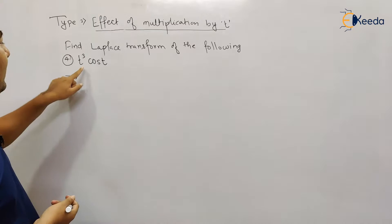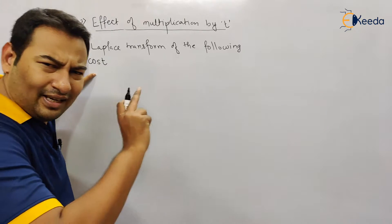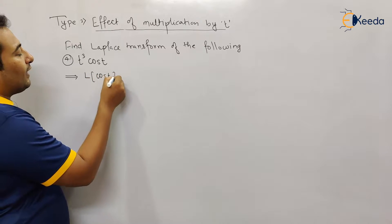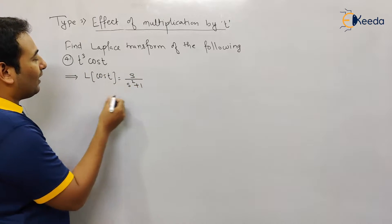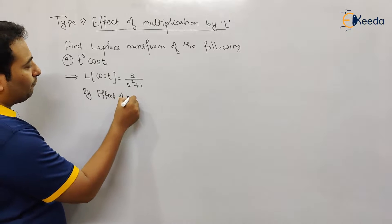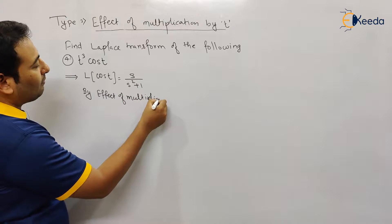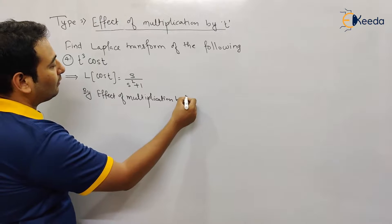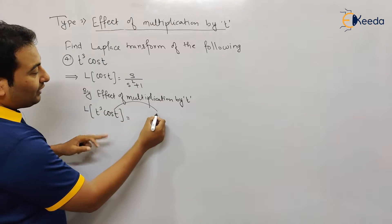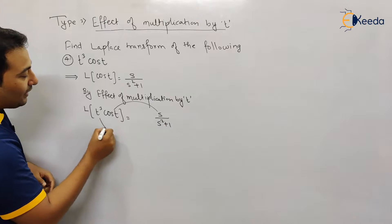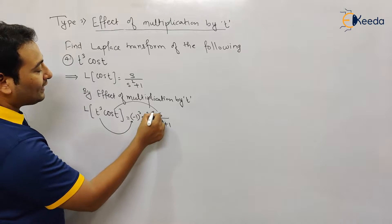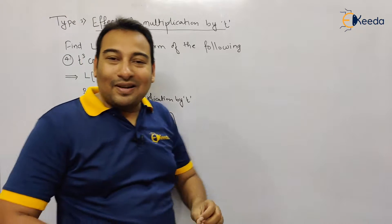Again, the same approach: forget about the property 'effect of multiplication by t' for now. L{cos t} = s/(s²+1). By the effect of multiplication by t, for L{t³ cos t}, since we have t cubed, we differentiate with respect to s thrice. That's it — the Laplace transform setup is done.